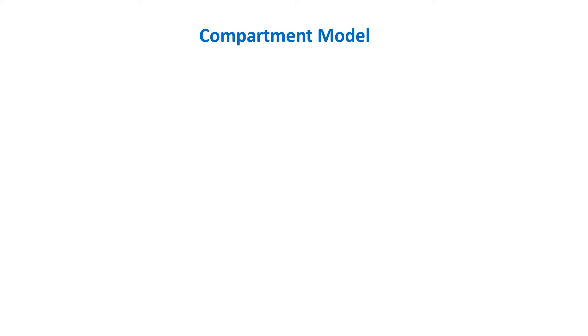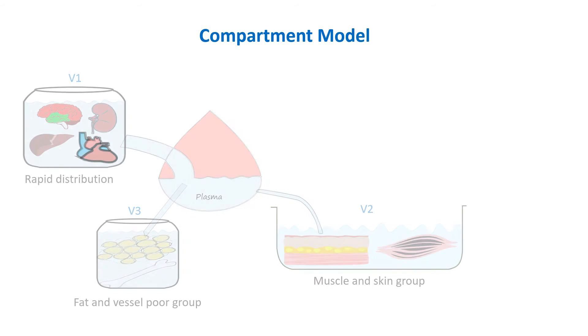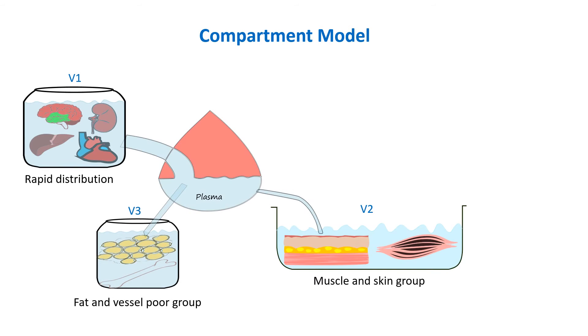Earlier, we have seen that drugs are distributed into tissues and organs based on the amount of blood flow they receive. Accordingly, tissues were grouped into vessel-rich group, muscle group, and vessel-poor group.